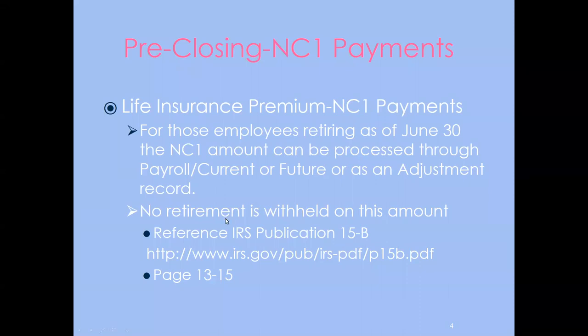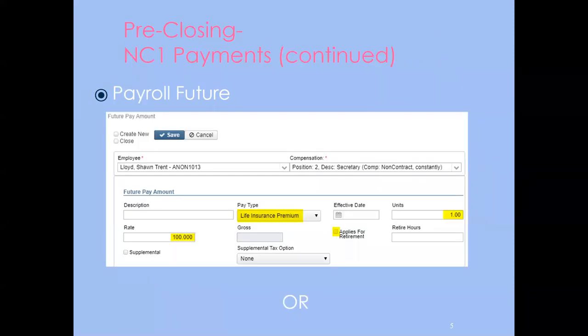I included Publication 15-B, which shows how you calculate any amount over $50,000 for the employee's life insurance — pages 13 through 15 is where you'll find that. Here's a screenshot of the payroll future: find your employee, enter it on their main position, add a description if you like, use pay type 'life insurance premium,' enter a unit of one, then enter the rate for that employee.